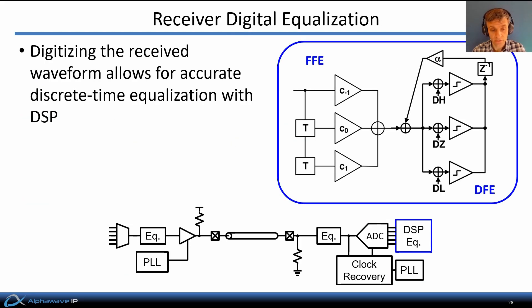Digitizing the received waveform allows for very accurate discrete-time equalization using digital signal processing, or DSP. For example, if we introduce an A-to-D converter in the receiver and follow that with a parallel DSP, we can perform FIR equalization and decision feedback equalization, where recovered symbols are passed through a second FIR filter and used to cancel predicted ISI of future incoming symbols. This combination of a feedforward equalizer and a decision feedback equalizer is quite common in DSP-based wireline receivers.